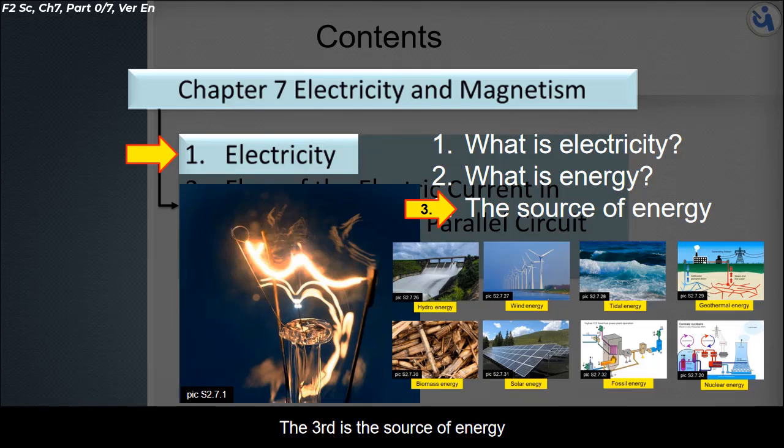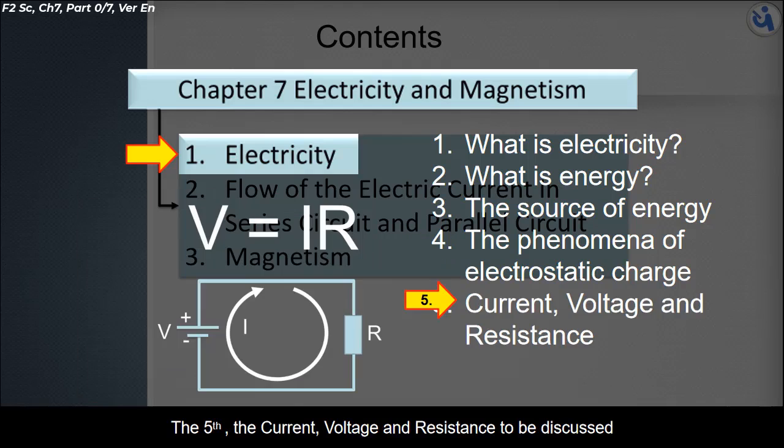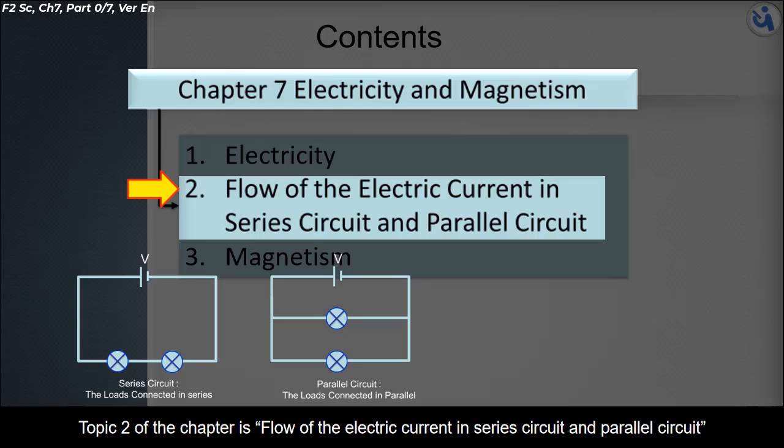The third is the source of energy. The fourth, we will talk about the phenomena of electrostatic charge. The fifth, the current, voltage, and resistance to be discussed. Topic 2 of the chapter is flow of the electric current in series circuit and parallel circuit.